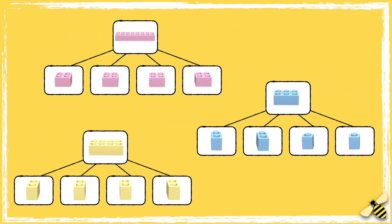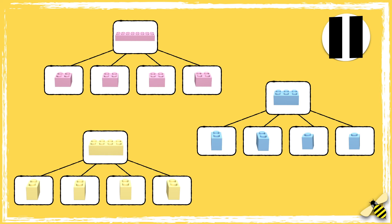Two of these shapes have been split into quarters; one of them has not. Can you spot the odd one out? Pause the video to give you time to work out the answer. Press play when you're done.